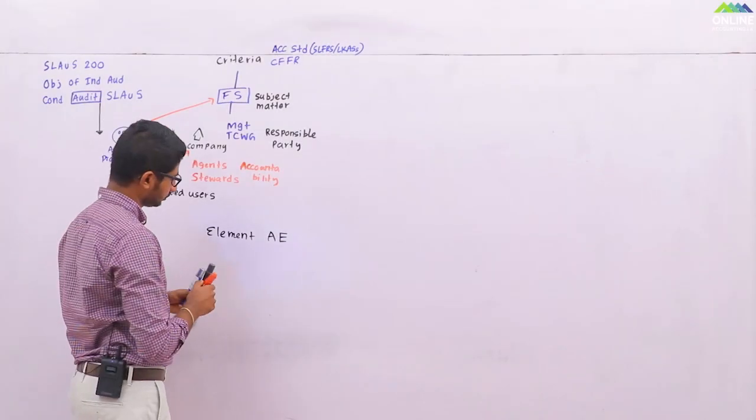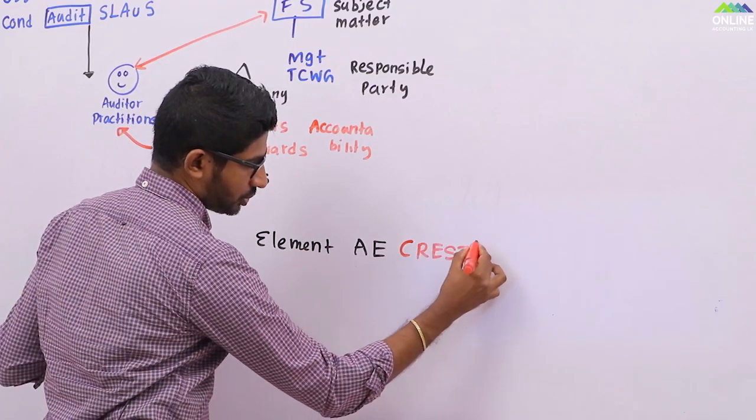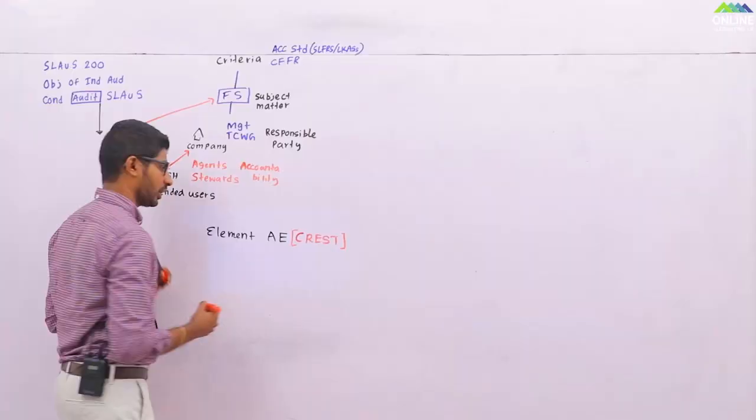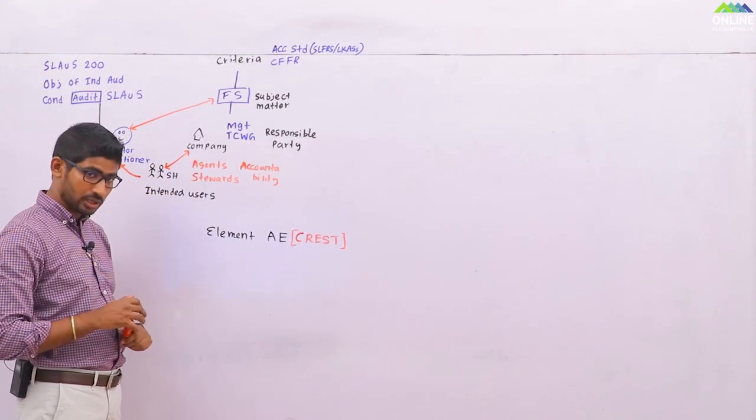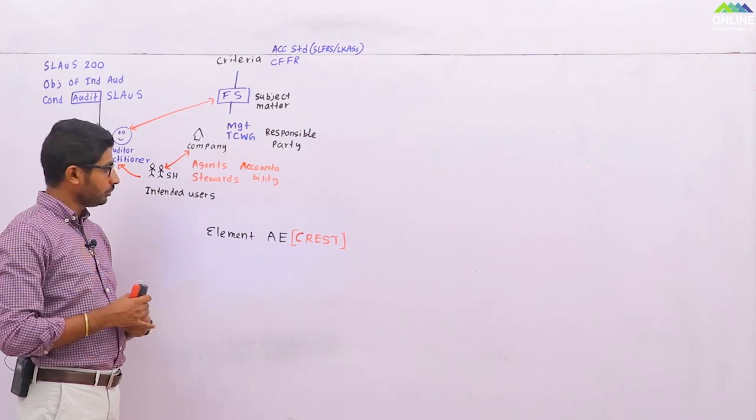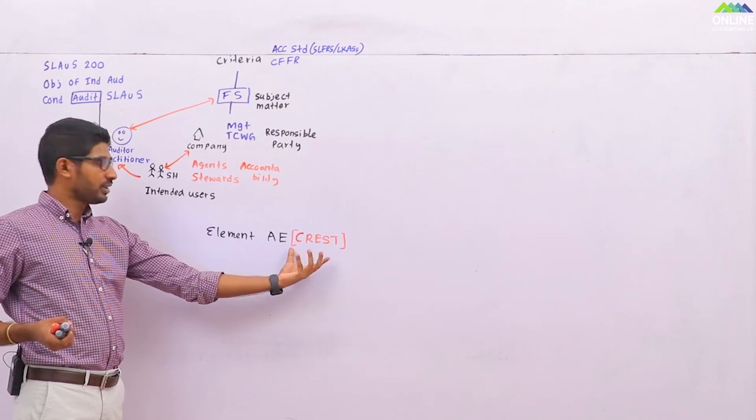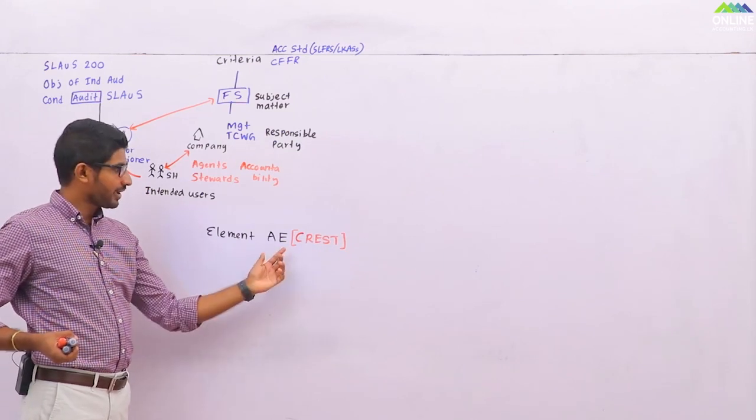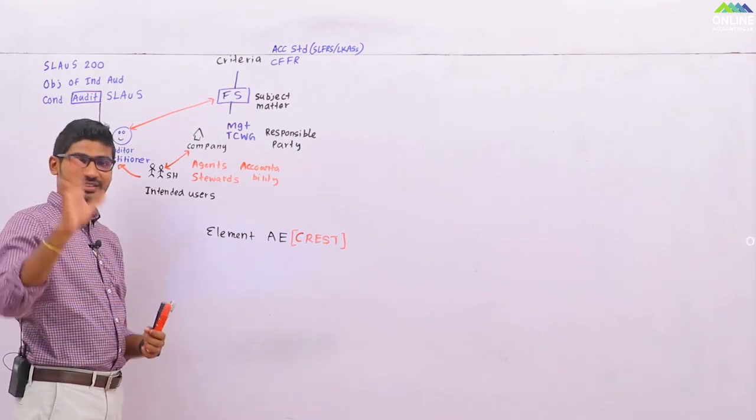This is CREST. Short word is CREST. So when it comes to auditing standards, we have this kind of important areas. All the time, if you can, you can put this into a simplified word like this. So what is meant by CREST?